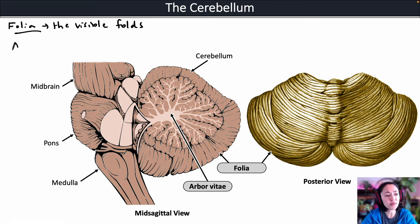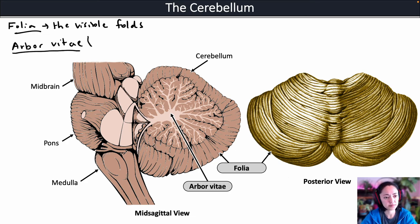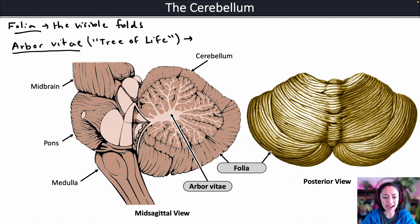The term arborvitae actually means tree of life — arbor means tree, vitae means life. The arborvitae are the branches of white matter visible in the cerebellum. The white matter contains the axons of the neurons, so wherever you have white matter, you have a lot of signals being transmitted.